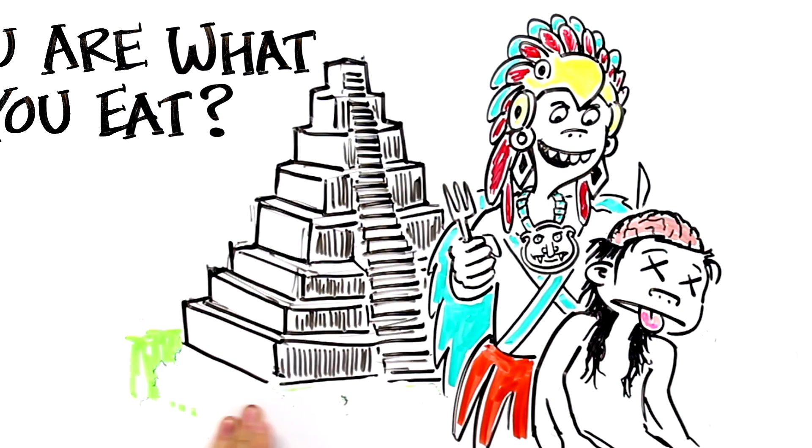The ancient Aztecs would eat the brain of their rivals because they believed it gave them the wisdom and knowledge of their enemies.